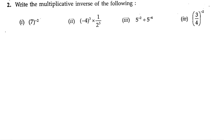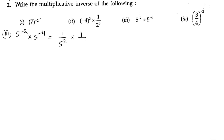Third bit is 5 to the power of minus 2 divided by 5 to the power of minus 4. First we will solve this. The powers are negative, so we will get the powers positive. 5 to the power of minus 2 can be written as 1 by 5 squared, into 5 to the power of 4, using the formula a to the power of minus n equals 1 by a to the power of n.